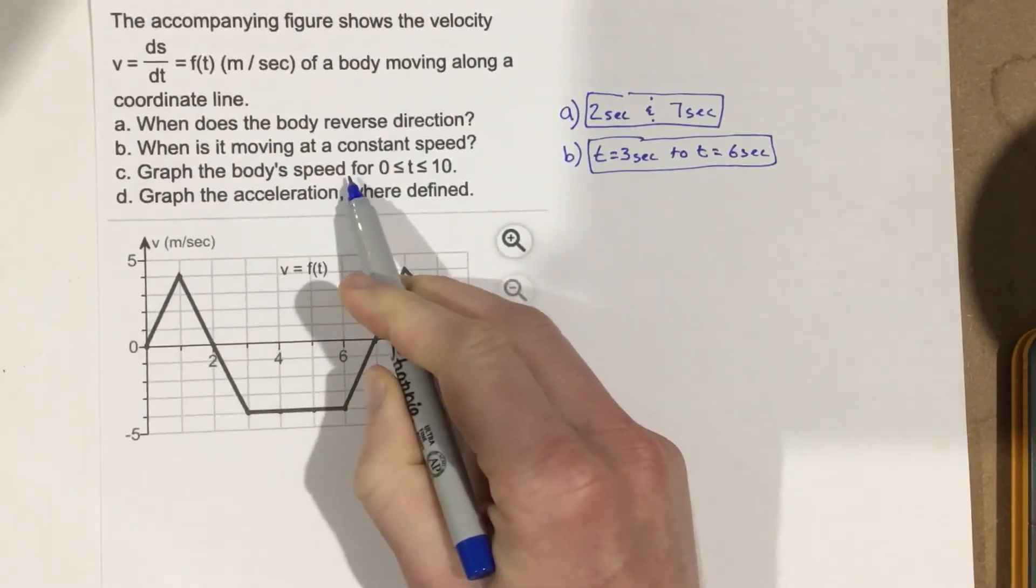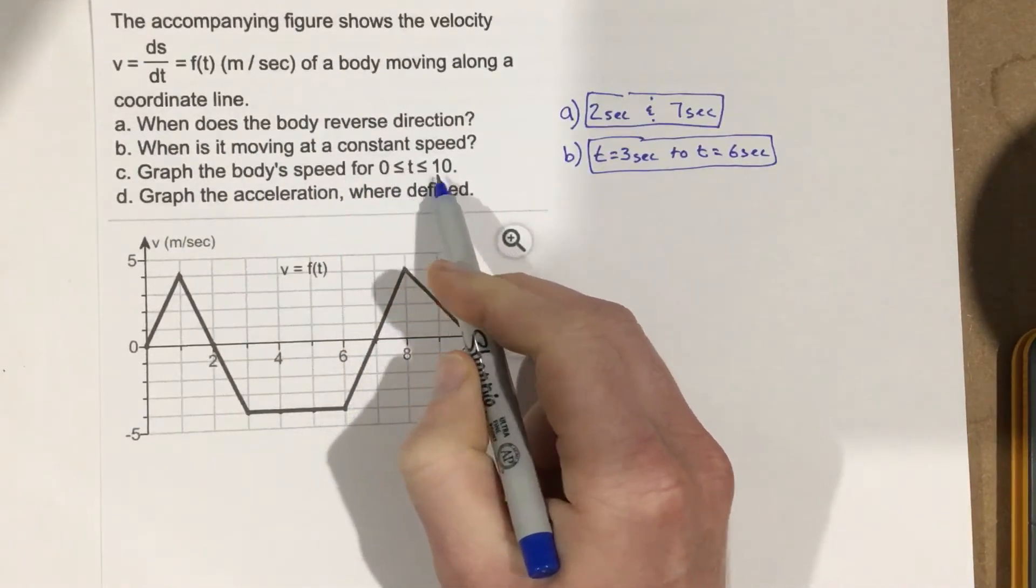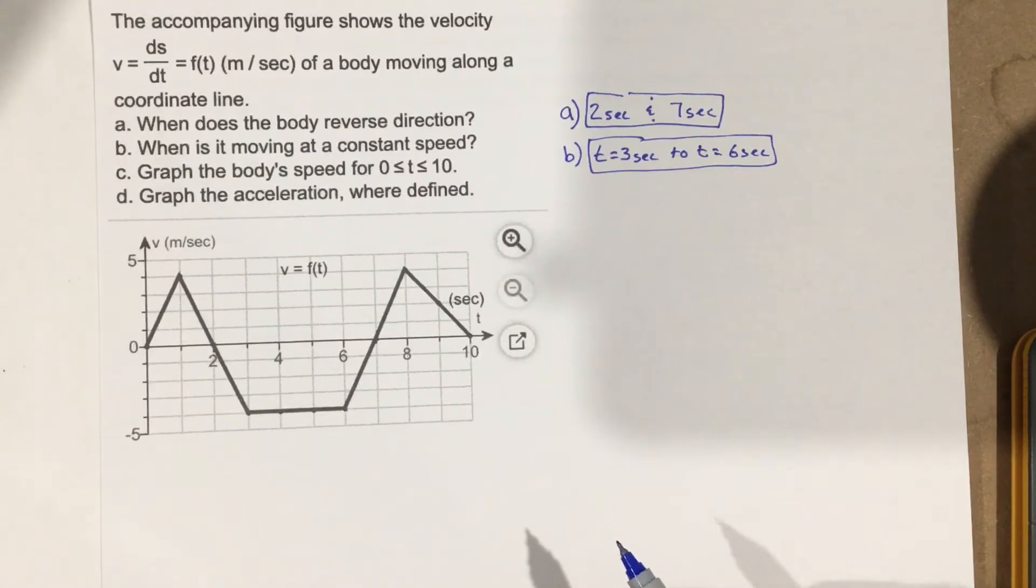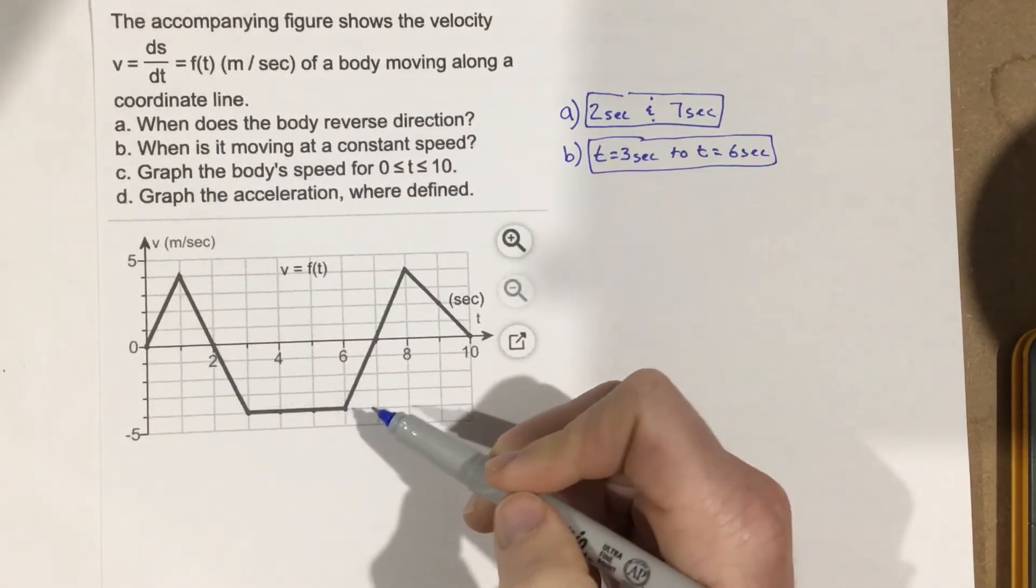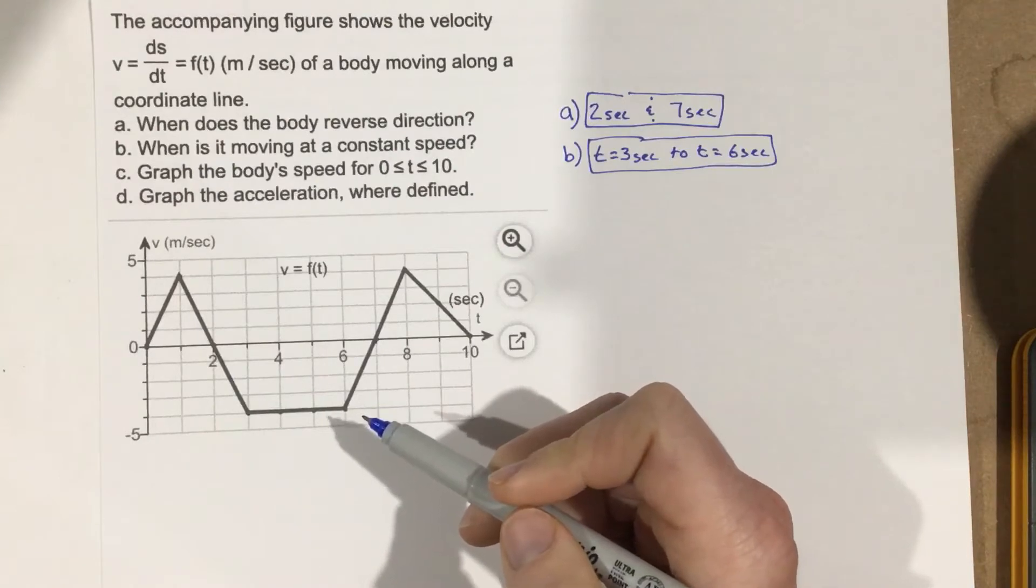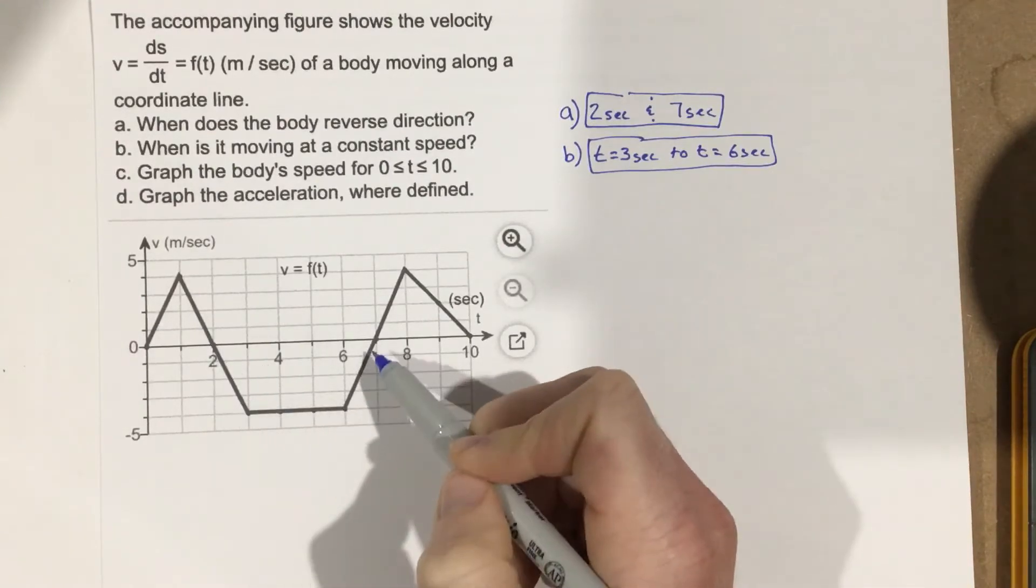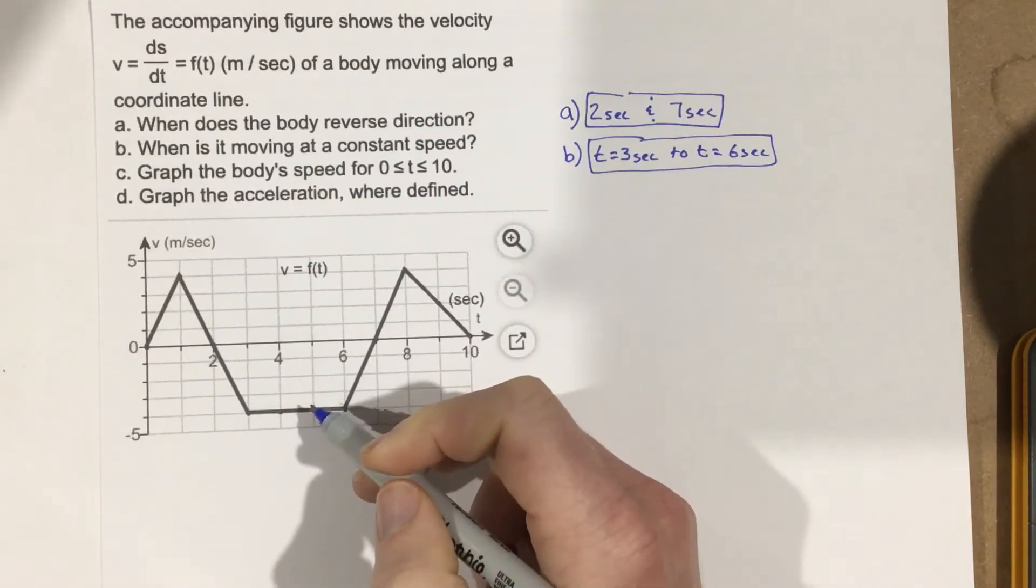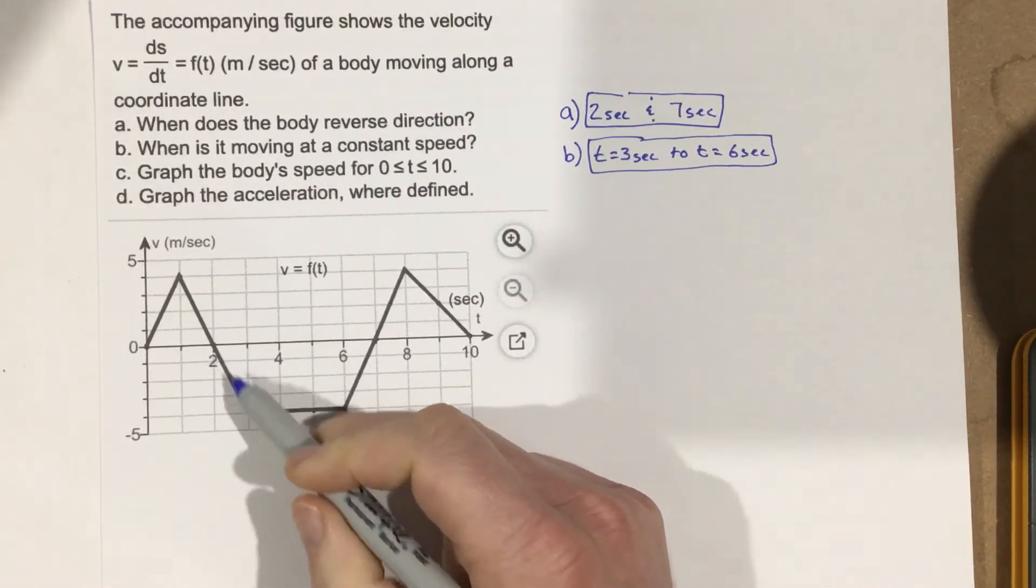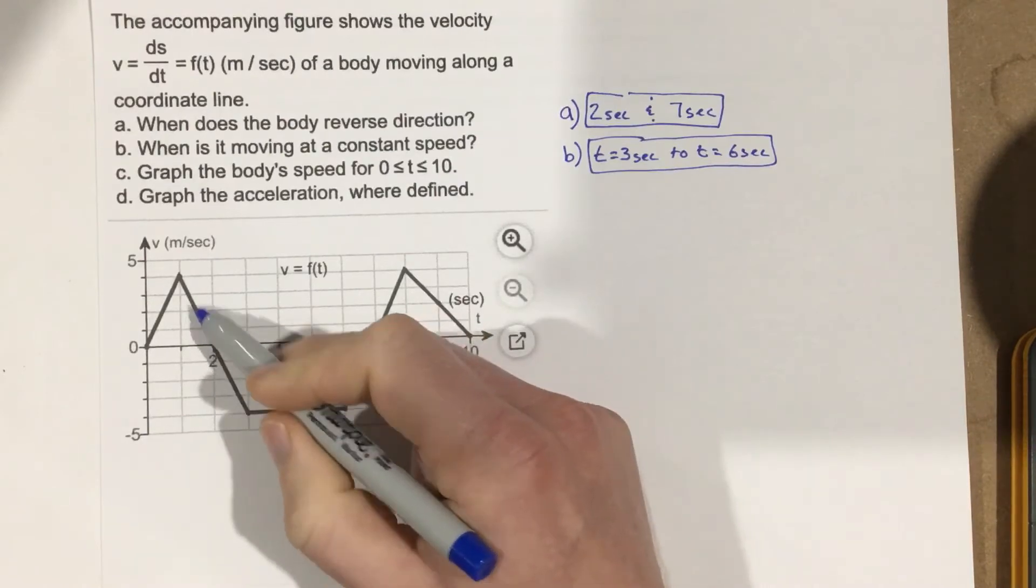Graph the body's speed for zero less than or equal to t less than or equal to ten. So that wants to graph the speed. This is the velocity, remember, so this has a direction. Well, if we're talking speed, we can't have a negative speed. Negative speed doesn't occur. We can have a negative velocity because this is interpreting direction, so this is going opposite direction of this here.